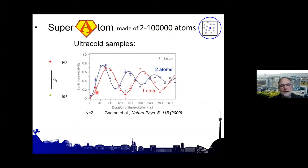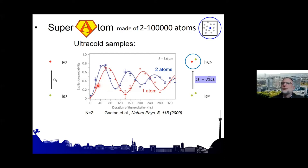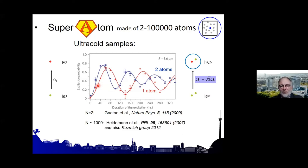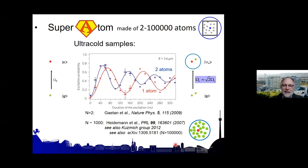This idea can be tested. In pioneering experiments by Antoine Browaeys, if you put one atom in your box you see one Rabi oscillation; if you put two atoms in the box, the Rabi oscillation speeds up by exactly √2. We have also measured this for N=1000 and observed the √1000 speedup. There are many papers by now demonstrating this.